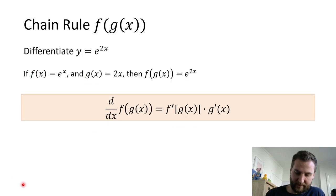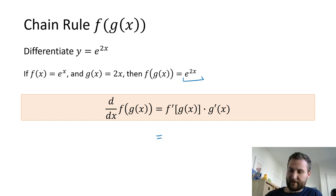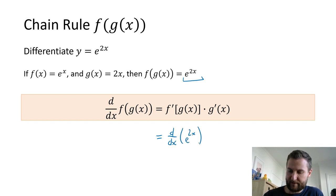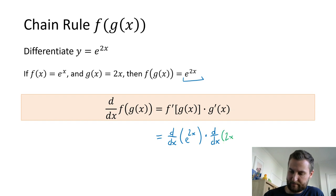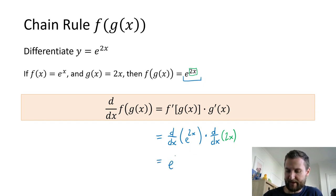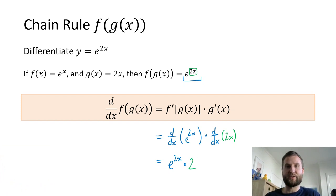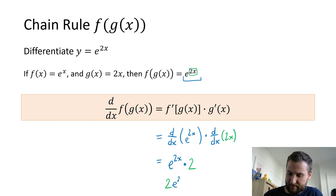Find the derivative of e to the 2x. So I've got f prime of the whole thing — that's the derivative of e to the 2x — multiplied by the derivative of 2x. This first derivative is an exponential function, so it's just itself: e to the 2x. But then I have this corrective term, the derivative of 2x, which is multiplied by 2. All you can do to simplify this is write the 2 out front, so we get 2e to the 2x as my final derivative.